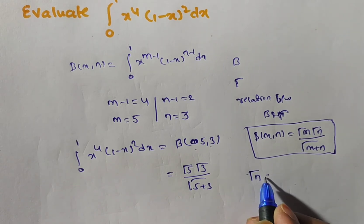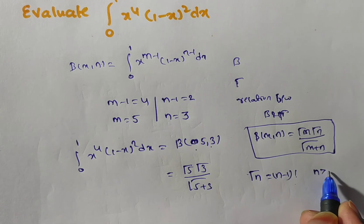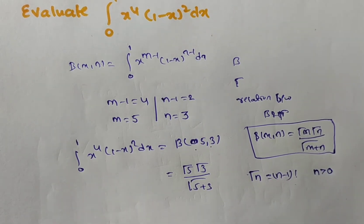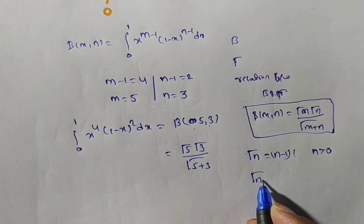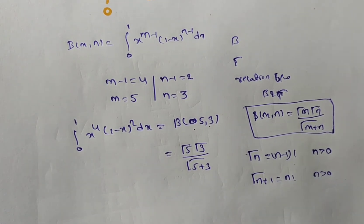Friends, already we have gamma n is equal to n minus 1 factorial for n greater than 0. N is a positive. Or else, n plus 1 is equal to n factorial also. Both will be same. This is also for n greater than 0.